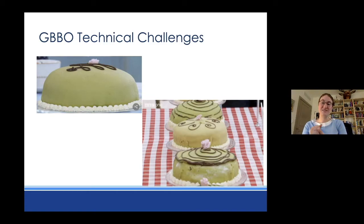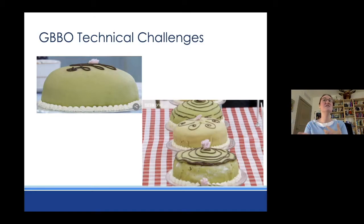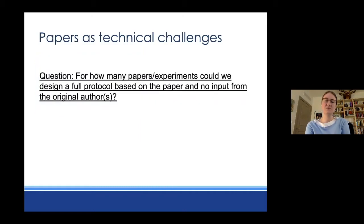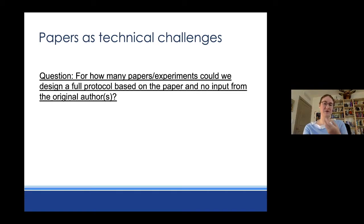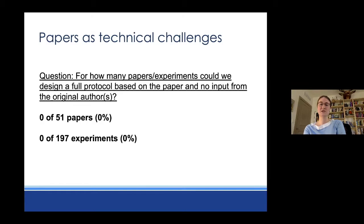In science, we can think about this as really knowing the method. The method section of many papers has some detail, but not nearly enough that you would actually need to reproduce the method that generated the data. A good example is one of the replicability projects COS has been working on: the Reproducibility Project in Cancer Biology (RPCB). All these experiments have been reproduced, and the question was how many papers could we design a full methodological protocol for based only on the published paper with no input from original authors. Zero — every single paper had some key detail missing.